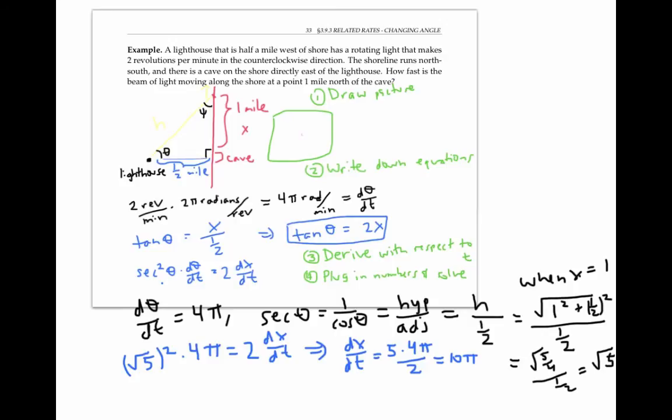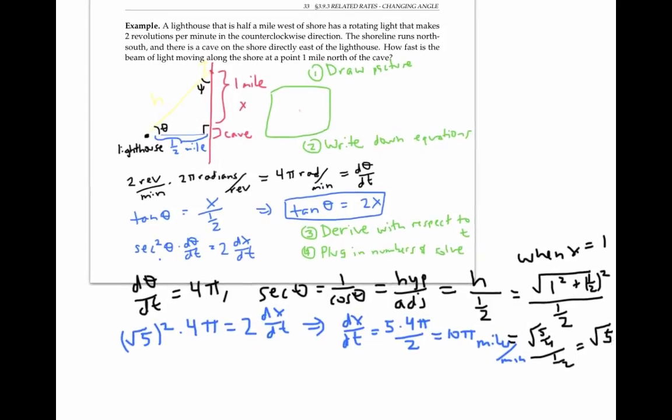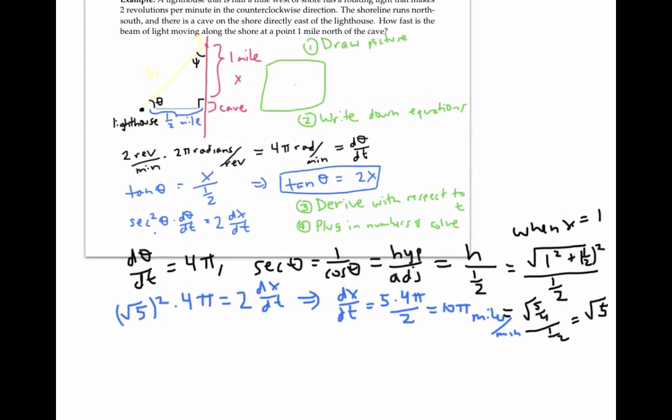So what are the units here on dx/dt? Since our distance has been in miles and our time is in minutes, this is 10π miles per minute. If I want to convert this to more standard units of miles per hour, I can just multiply my 10π miles per minute by 60 minutes per hour to get 600π miles per hour. That works out to about 1,885 miles per hour, which is pretty darn fast.